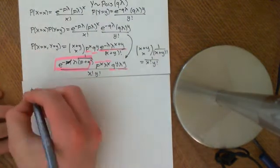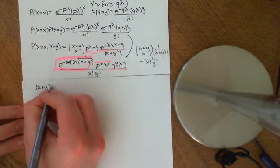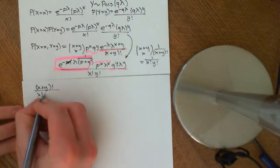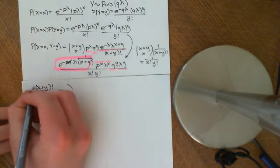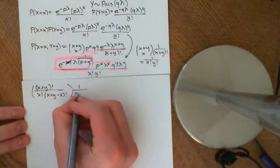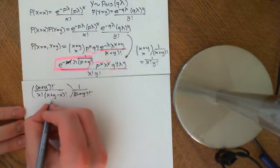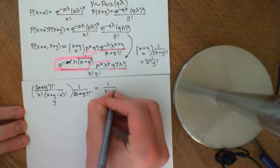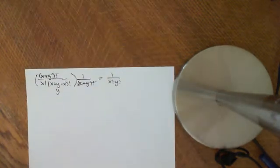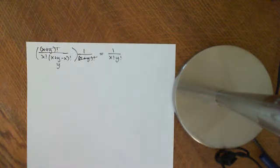Expanding x+y choose x as (x+y)! / (x! · (x+y−x)!) = (x+y)! / (x! · y!), then multiplying by 1/(x+y)!, the (x+y)! cancels, leaving 1/(x! · y!). This confirms that P(X=x, Y=y) = P(X=x) · P(Y=y), proving that the number of eggs that hatch and the number that don't hatch are perfectly independent random variables.